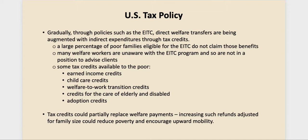There are other tax credits aside from the earned income credit — childcare credits, welfare to work transition credits, credits for taking care of the elderly and disabled, and adoption credits. For special needs children adopted through the state, there's quite a large tax credit taken right out of your tax payment — not just a deduction. The thinking here is that tax credits could partially replace direct payments and might be a way to soothe the nerves of individuals who worry about where their tax monies are going.